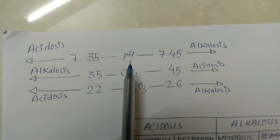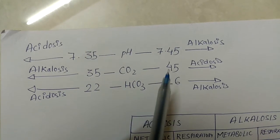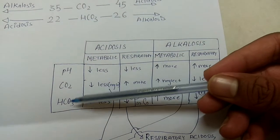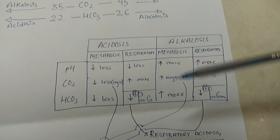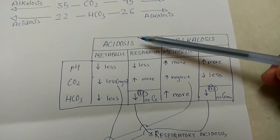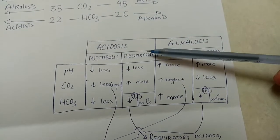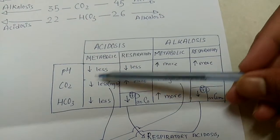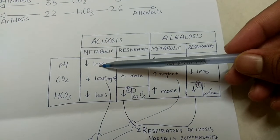Normal values: pH 7.35–7.45, CO2 35–45, HCO3 22–26. CO2 and HCO3 may compensate each other. To determine whether a condition is metabolic or respiratory: if it is respiratory, it is associated with a change in CO2; if it is metabolic, it is associated with a change in HCO3.